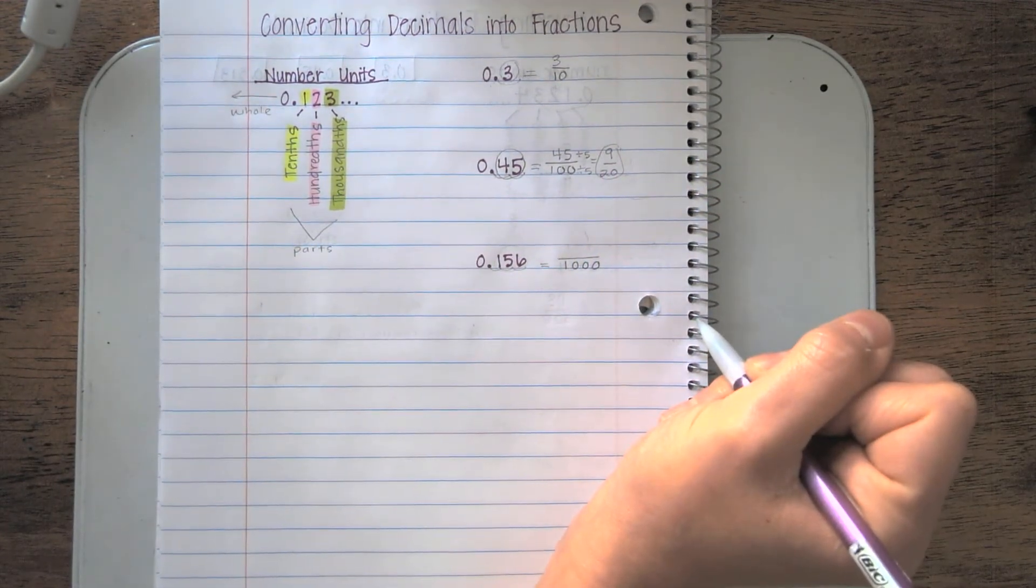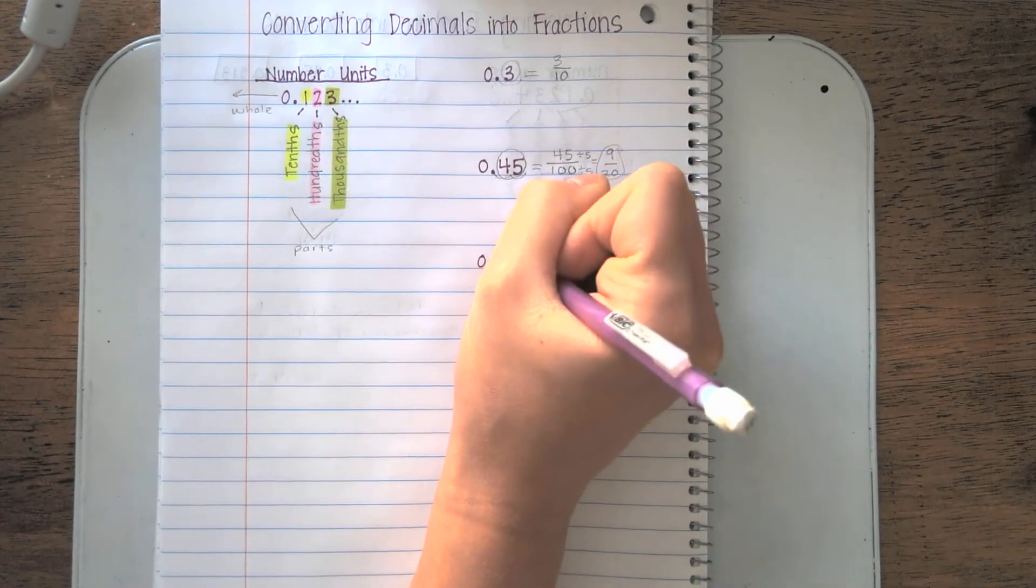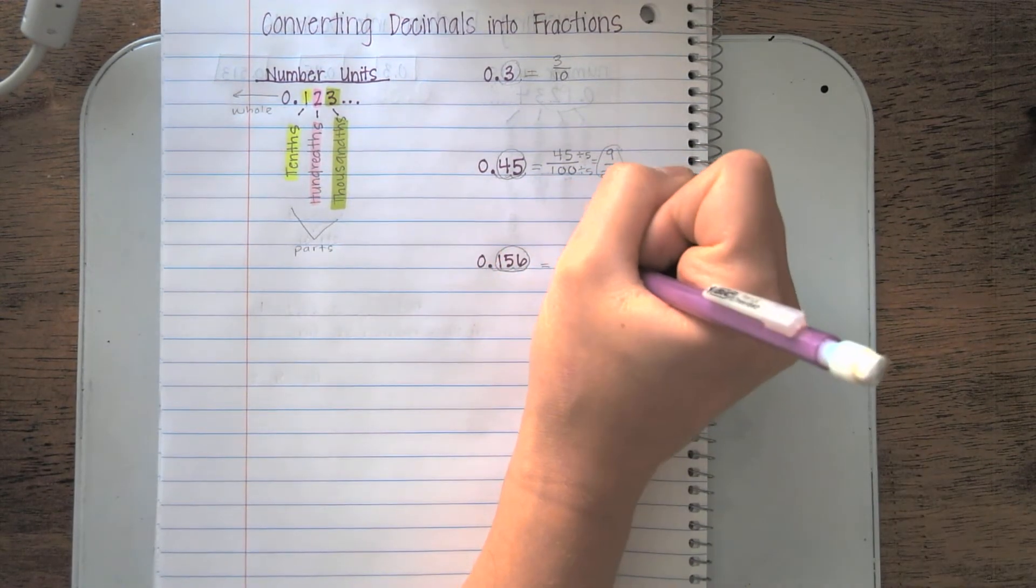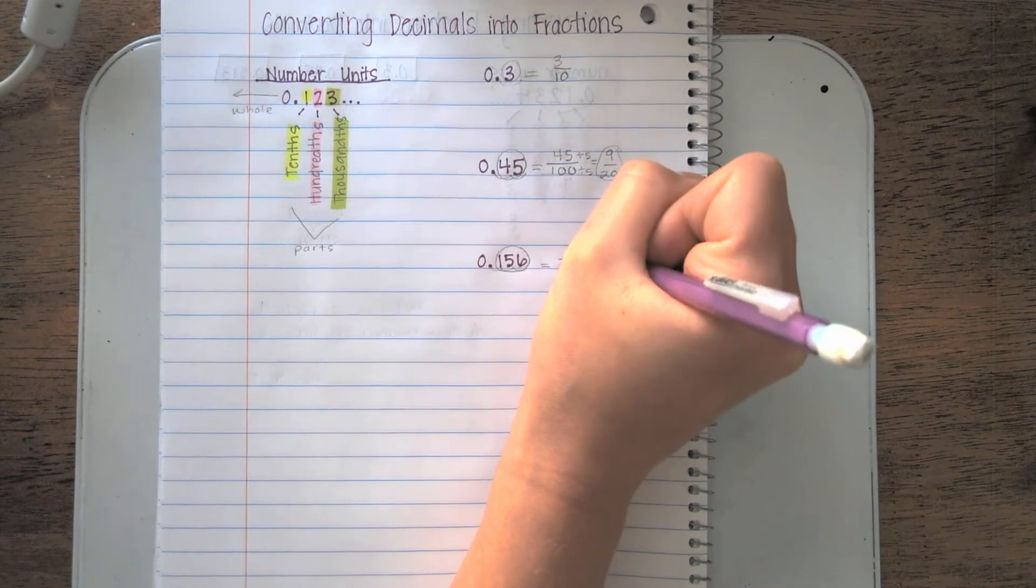What number do I put in my numerator? That would be all the digits to the right of that decimal. I have three. It's going to be 156.